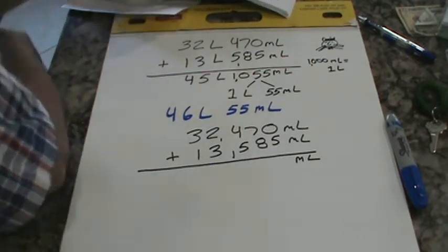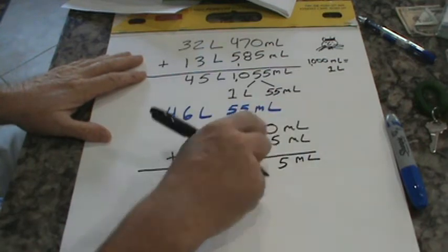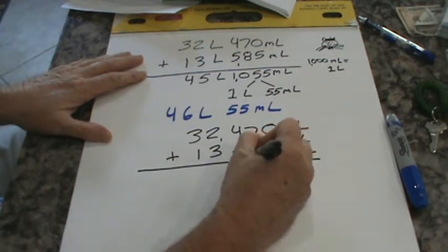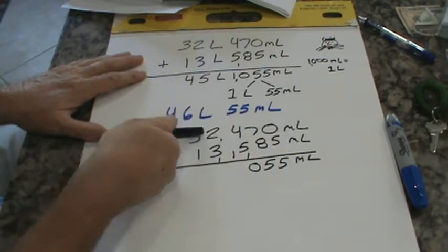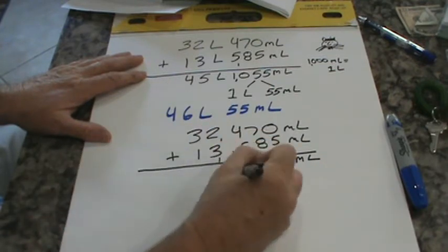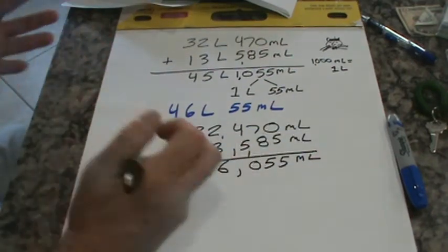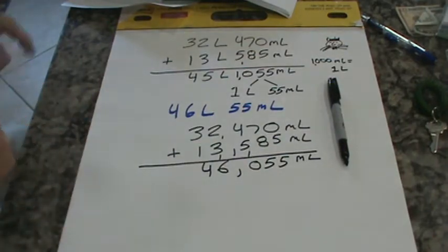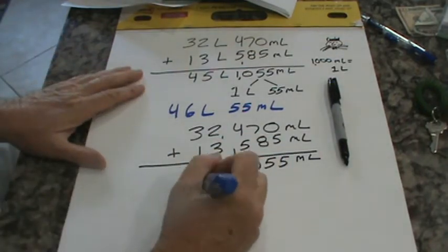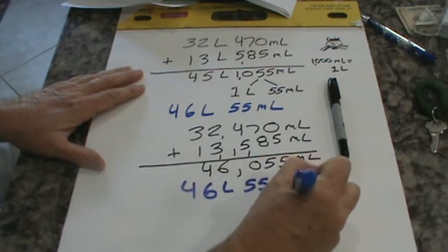And welcome back, you fabulous math masters. Here we go. 0 plus 5 is 5. 7 plus 8 is 15. 6, 7, 8, 9, 10. 1, 2, 3, 4, 5, 6. Put my comma there. 3 plus 1 is 4. So you have 46,055 milliliters, which would equal, look up here. Remember, 1,000 milliliters equals a liter. So 46 liters, 55 milliliters.